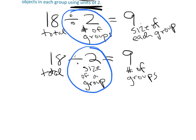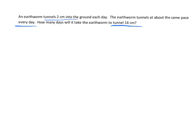In this problem, an earthworm tunnels 2 centimeters into the ground each day, at the same pace every day — always 2 centimeters. How many days will it take for the earthworm to tunnel 14 centimeters?